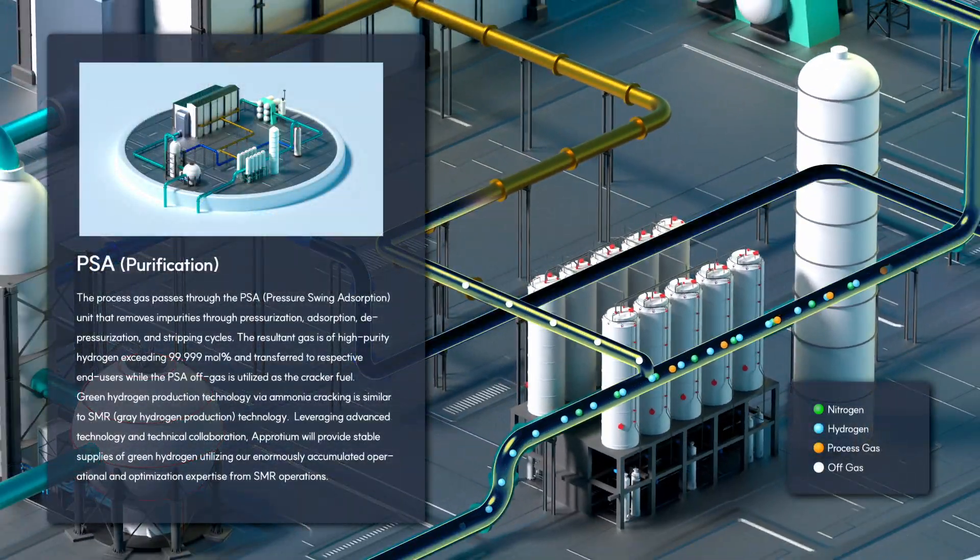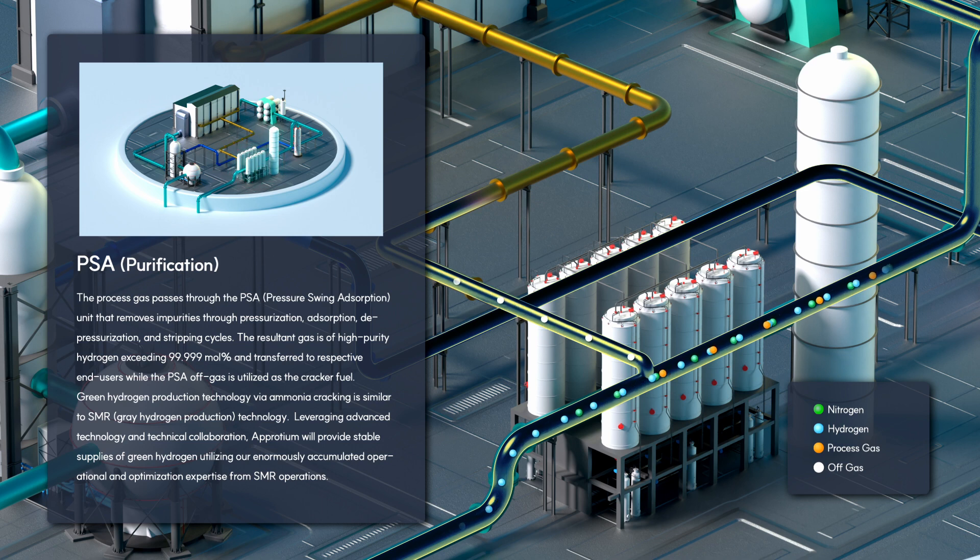The process gas passes through the PSA unit that removes impurities through pressurization, adsorption, depressurization, and stripping cycles. The resultant gas is high-purity hydrogen exceeding 99.999 mol percent and transferred to respective end-users, while the PSA off-gas is utilized as cracker fuel.